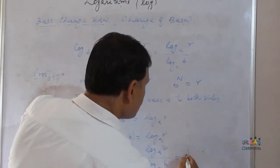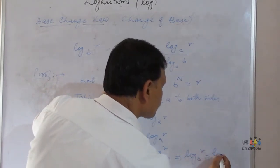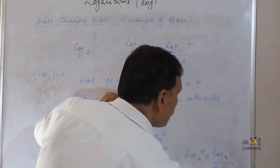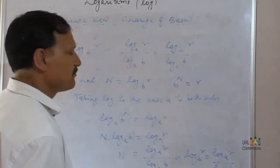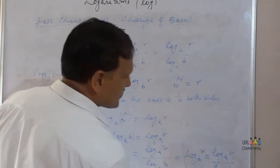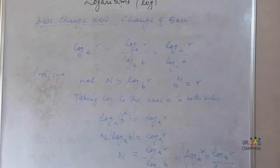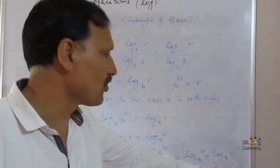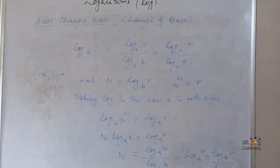This implies log of r to the base b is equal to log of r to the base a divided by log of b to the base a. This proves the base change formula: log of r to the base b equals log r to the base a over log b to the base a.